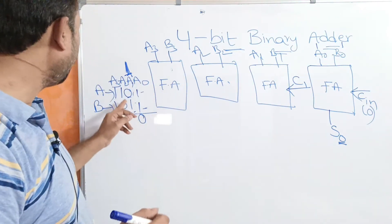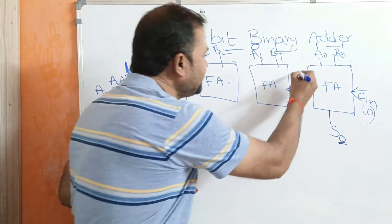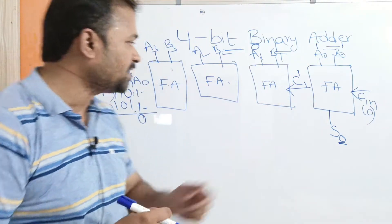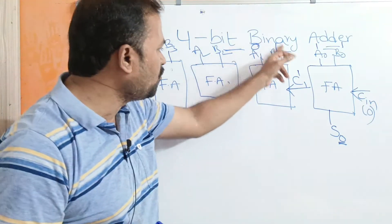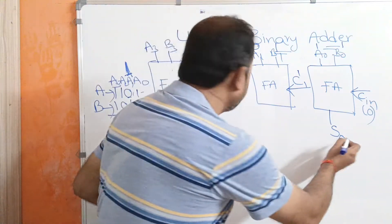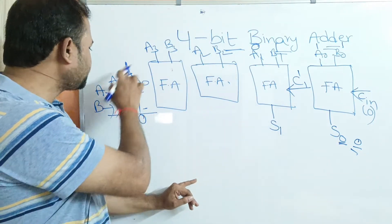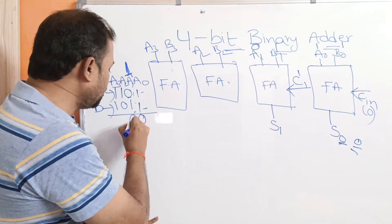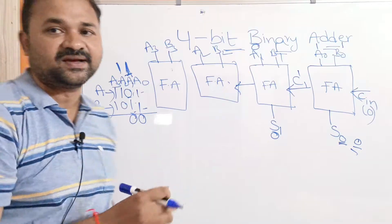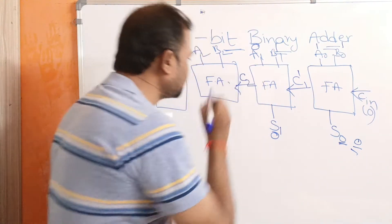The output carry of the first full adder is connected as input carry to the next full adder. A1=0, B1=1, and C1=1. This full adder performs addition on 0+1+1: the result is 0 with a carry of 1, so S1=0. That output carry is denoted C2 and is connected as input carry to the next full adder.